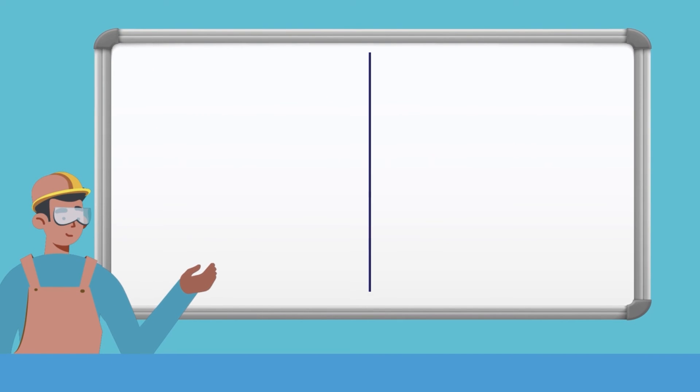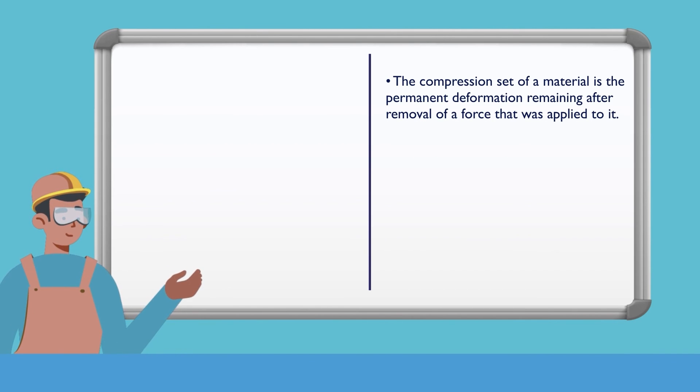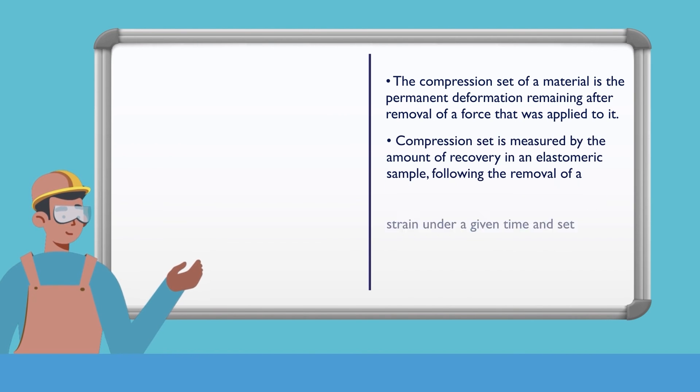Let's recap what we've learned. The compression set of a material is the permanent deformation remaining after removal of a force that was applied to it. Compression set is measured by the amount of recovery in an elastomeric sample following the removal of a strain under a given time and set temperature.